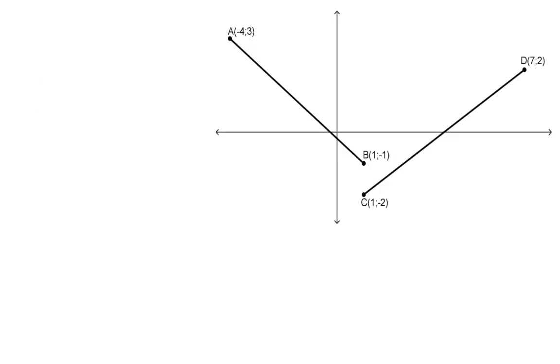Here we have line segments AB and CD, and even before calculating their gradients, you should be able to say that AB is moving downwards from left to right and should have a negative gradient.